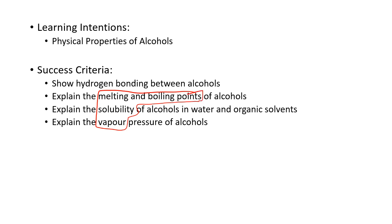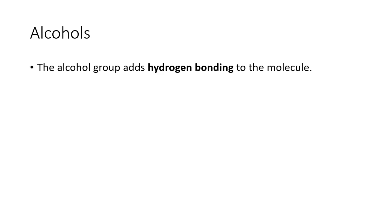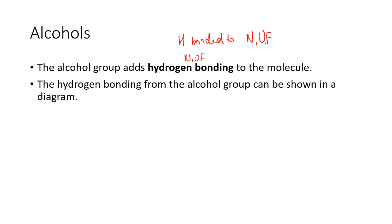The alcohol group adds hydrogen bonding to the molecule. If you remember hydrogen bonding, you need a hydrogen bonded to an N, O, or F, and you also need a lone pair on an N, O, or F. If you have those two conditions, you can have hydrogen bonding. The hydrogen bonding from the alcohol group can be shown in this diagram.